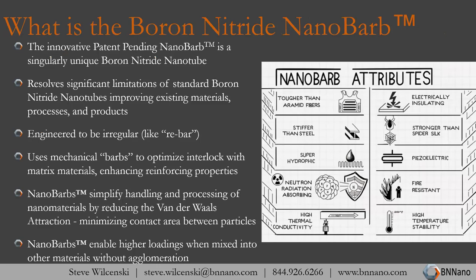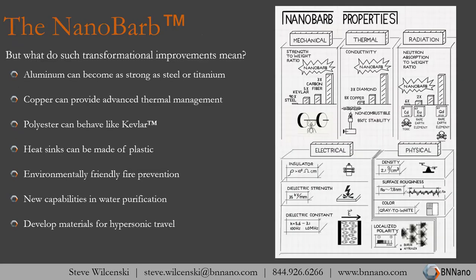The nanobarb — think of it as a rebar at the nanoscale. It helps reduce the van der Waals attraction, allowing our material to disperse throughout whatever material we're mixing with, providing greater stability and greater strength. Its attributes include: aluminum can become as strong as steel, copper can provide advanced thermal management, polyester can be like Kevlar, it enables heat sinks and environmentally friendly fire protection — on our website we have a cotton ball lit by a torch that doesn't burn — as well as water purification and hypersonic applications.